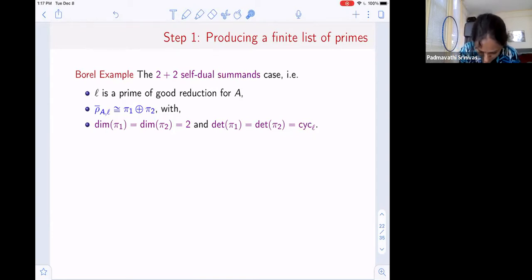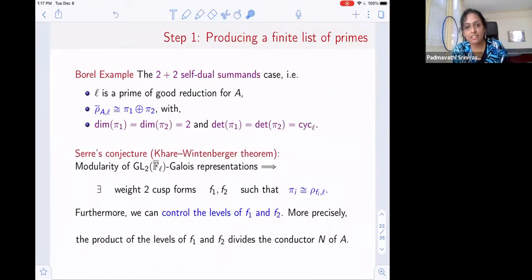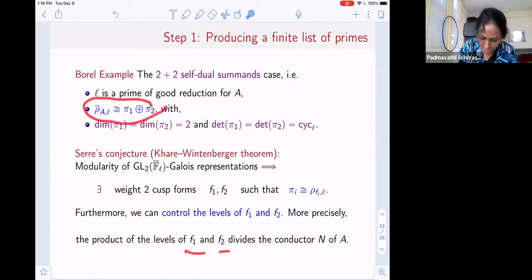If the Galois image is not surjective, it means the representation breaks up somehow. In this case, we're going to assume that rho_A,L breaks up into two two-dimensional pieces, pi_1 and pi_2, two-dimensional subrepresentations. And each of these representations has determinant the cyclotomic character. We want to find all L such that this happens. So the first question you can ask is, can I say anything more about what these subrepresentations actually look like? And yes, you can. Thanks to Serre's conjecture, or the Khare-Wintenberger-Barnet theorem. It tells you that these two representations are modular. They come from weight two cusp forms. Each of these pi_i is the same as the representation associated to a weight two cusp form. And you can do even more. You can control the level of these. You can see which level these cusp forms show up. So the product of the levels of F_1 and F_2, just from this decomposition, you can conclude must divide the conductor of your abelian surface.